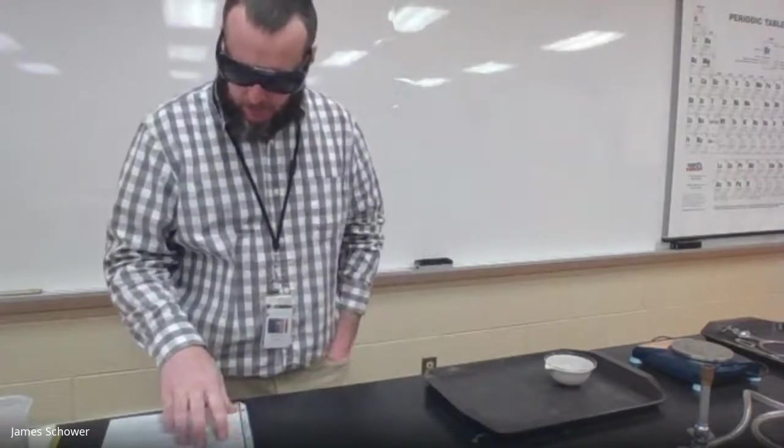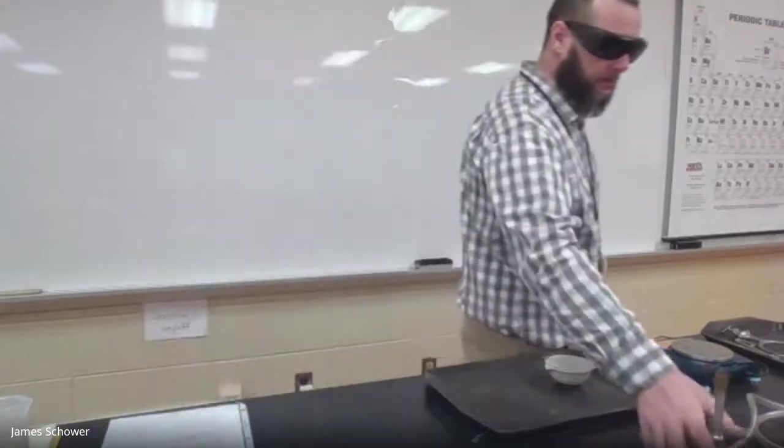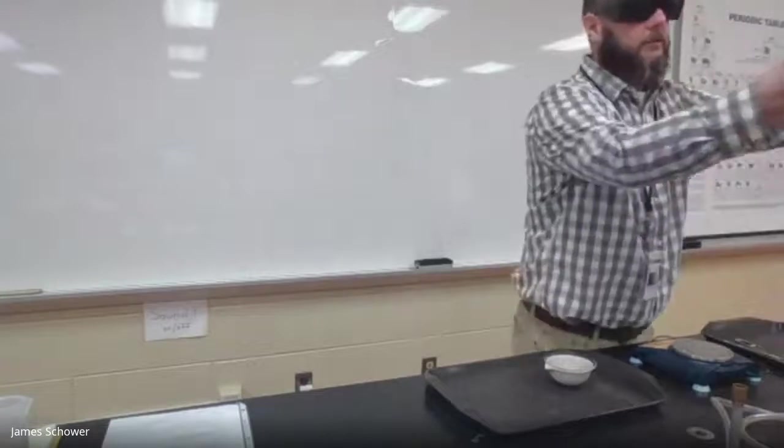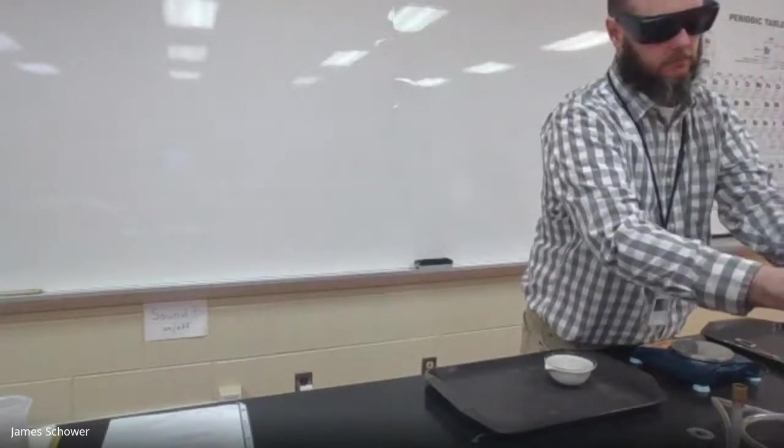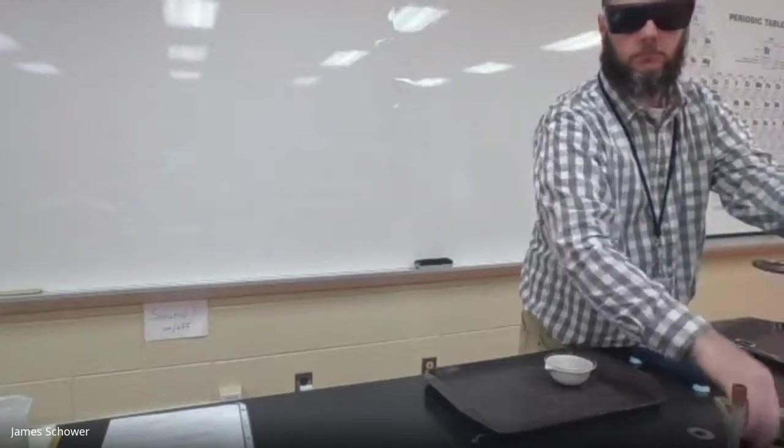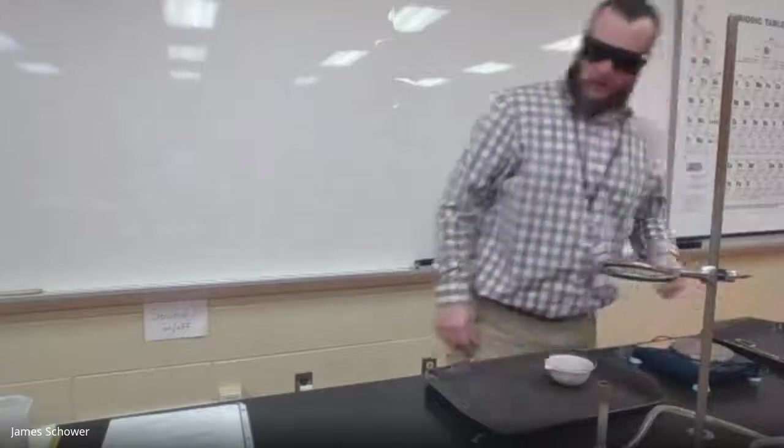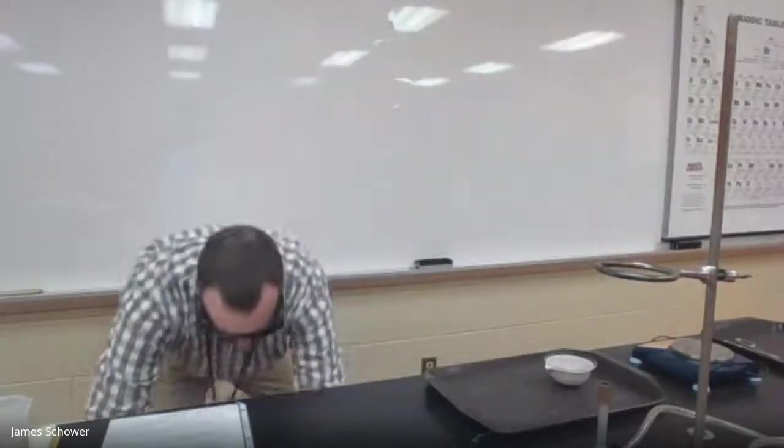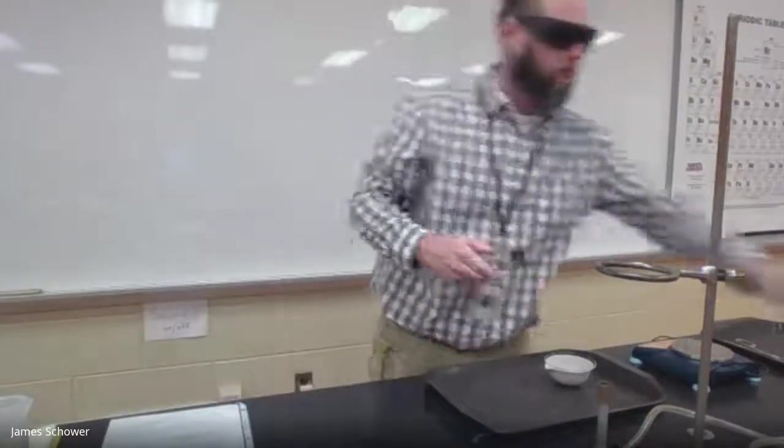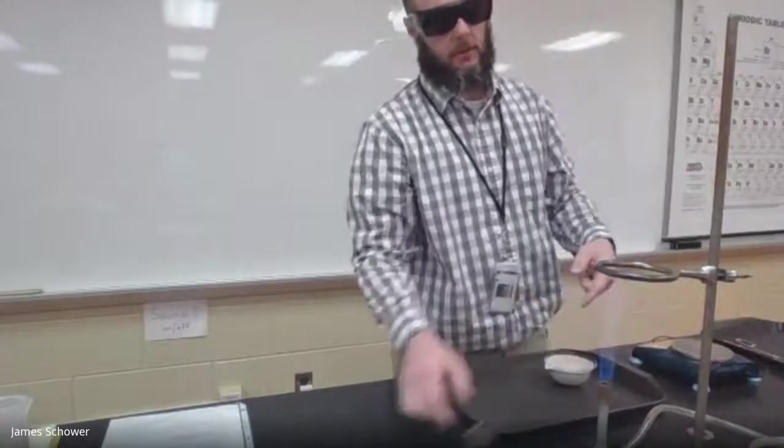Now, six, set up a ring stand with an iron ring, clay triangle, and Bunsen burner. So here's the Bunsen burner. Ring stand, iron ring. Goes on like so. What I want to do is spark up the Bunsen burner. Make sure it works. Let the gas come out. It works.